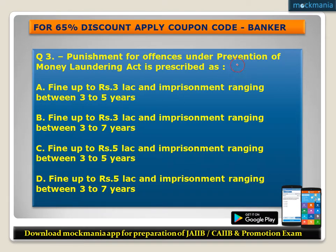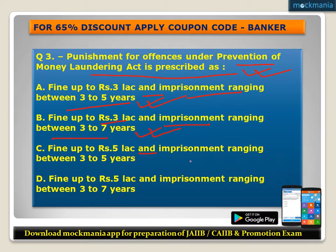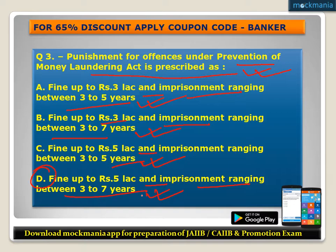Question number three: Punishment for offences under Prevention of Money Laundering Act is prescribed as? Options: A) fine up to rupees 3 lakh and imprisonment ranging between 3 to 5 years, B) fine up to rupees 3 lakh and imprisonment ranging between 3 to 7 years, C) fine up to rupees 5 lakh and imprisonment ranging between 3 to 5 years, D) fine up to rupees 5 lakh and imprisonment ranging between 3 to 7 years. The correct answer is D. Under PMLA, punishment is fine up to rupees 5 lakhs and imprisonment ranging between 3 to 7 years.